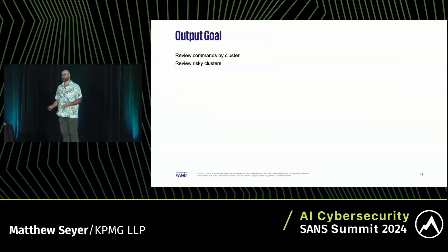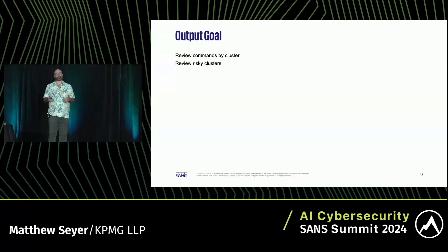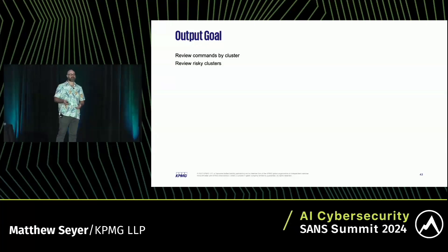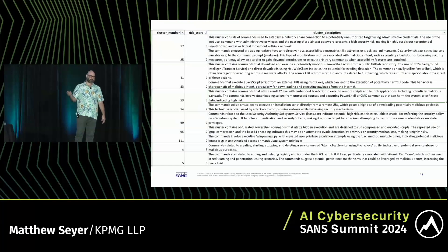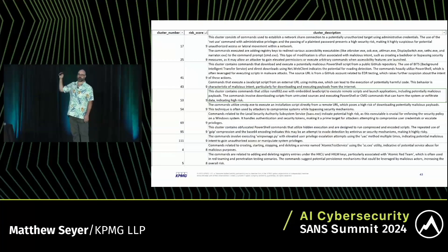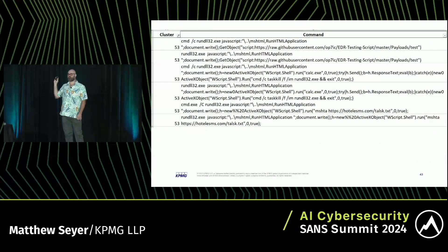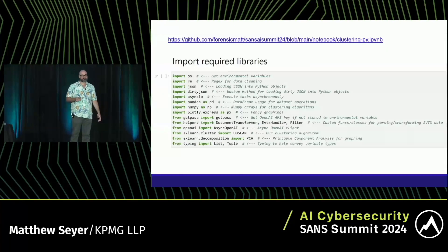Our output goals: I want to be able to take commands that have been executed on a system and review those commands by groups — what we call clusters — because each cluster will consist of similar activity. I want to assess those clusters for risky activity so I can view the most risky commands right at the get-go. The output should show a column for the cluster, a risk score, and a description of that cluster.